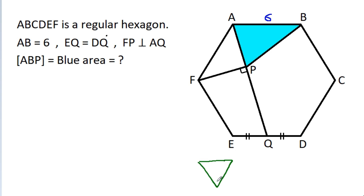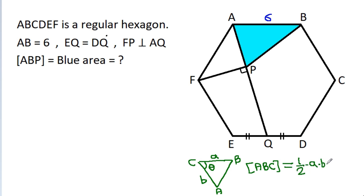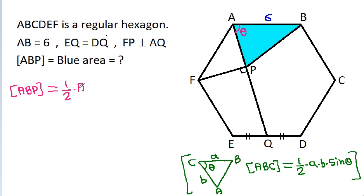In any triangle ABC, if BC is A and AC is B and the included angle is theta, then area of ABC is equal to 1/2 times A times B times sin theta. Here, suppose this angle is theta, then area of ABP will be equal to 1/2 times AB times AP times sin theta, which equals 1/2 times AB times FP.